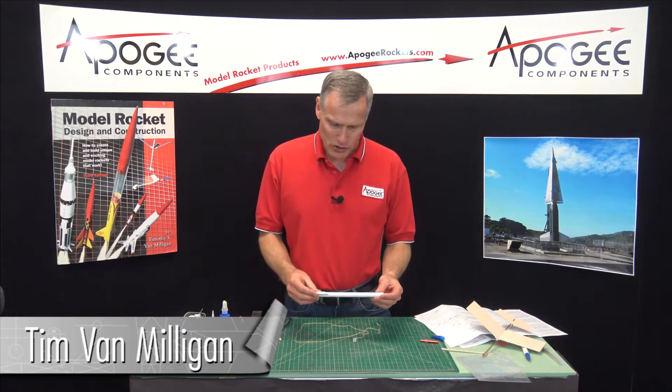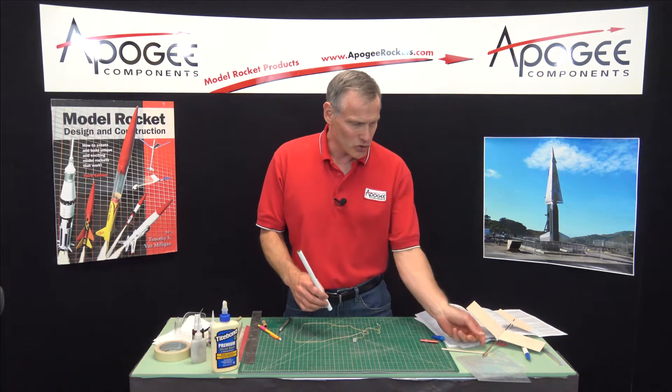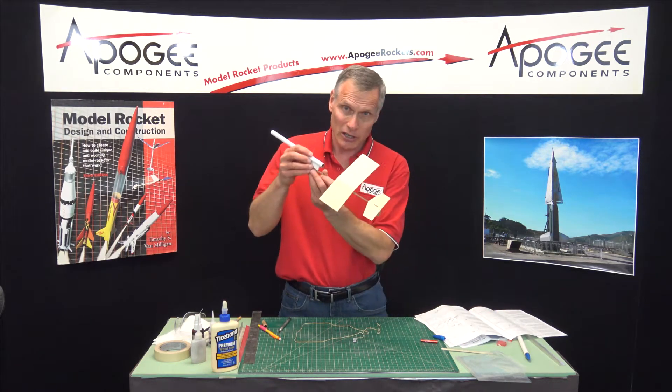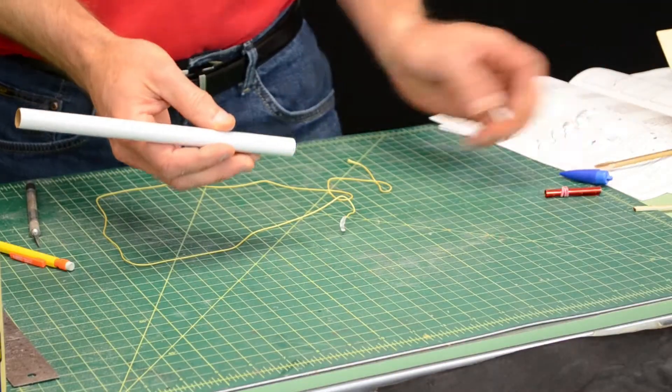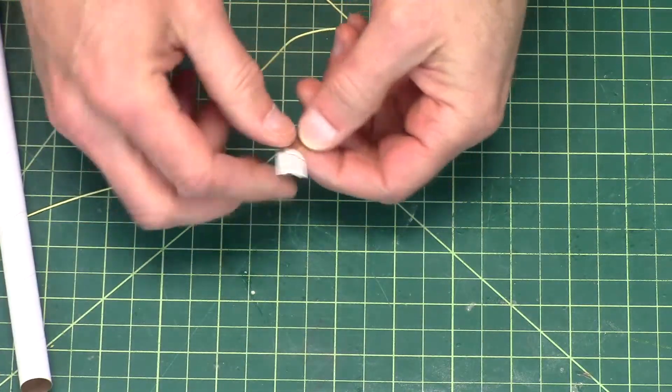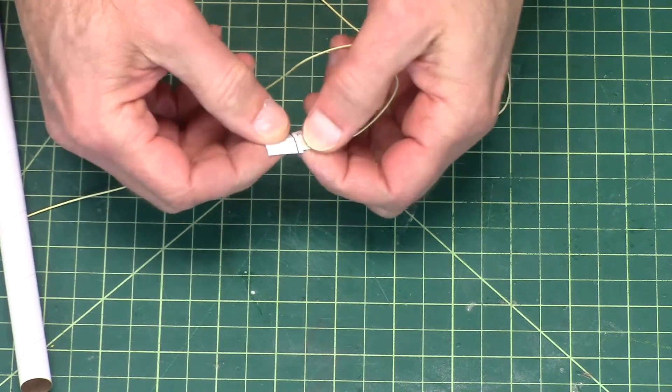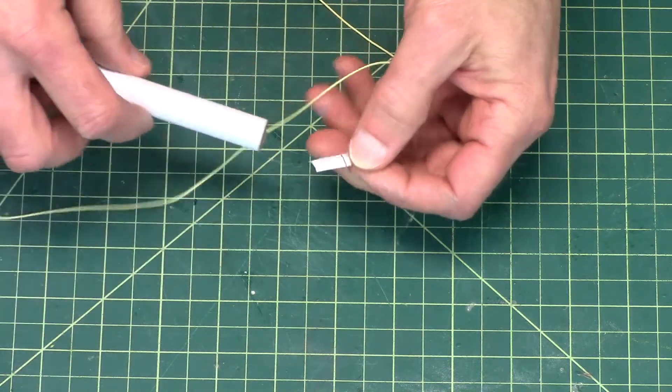We're in the middle of the construction of the pop pod that is used to carry the glider up into the sky. Last time we glued up the shock cord mount, and now we're going to glue it inside the tube.